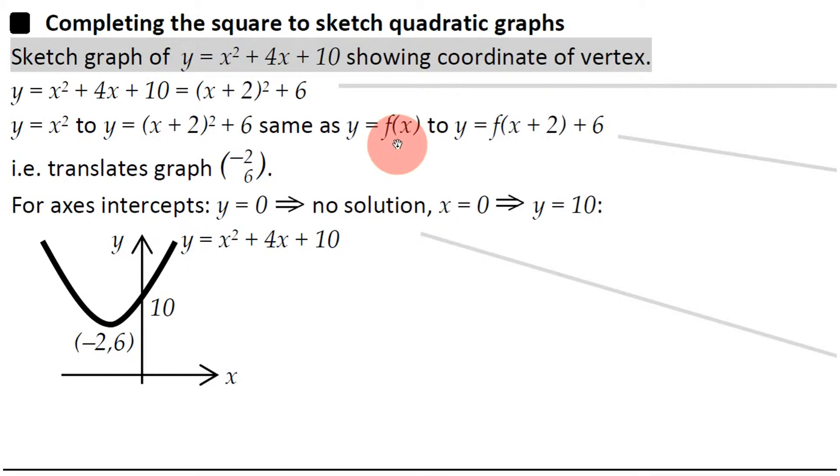And hopefully you know, changing the graph from here to there, this function to this function means going left 2 because we're adding 2 inside the function and up 6 because we're adding 6 outside the function.